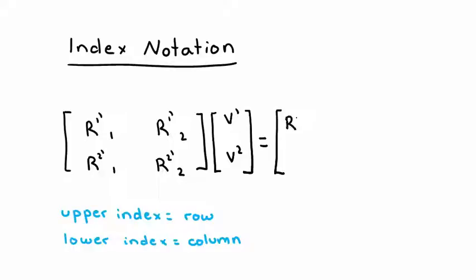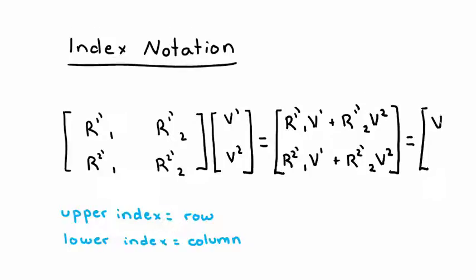When I multiply this matrix and this vector together, we should get some resulting vector with two elements as well. Just using matrix multiplication, we find that the first element should be equal to R1'1 times V1 plus R1'2 times V2. Similarly, the second element should equal R2'1 times V1 plus R2'2 times V2. We'll call the first element of the vector V1' and the second element V2' to represent the elements of the vector in the new or the primed coordinate system.